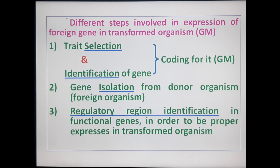There are six steps involved. The first step is trait selection — trait meaning character selection — and also identification of the gene coding for that trait.